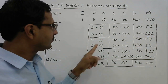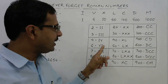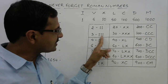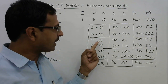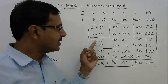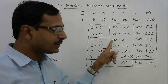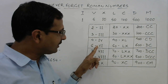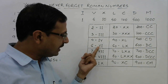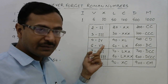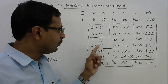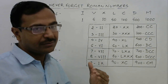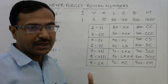Now for 4 and 6: IV and VI. Whenever a larger value is on the right-hand side, we subtract — so V on the right of I means 5 minus 1 equals 4, giving IV. But if the larger value is on the left, like VI, we add — 5 plus 1 equals 6.